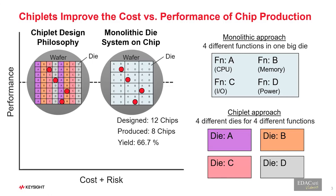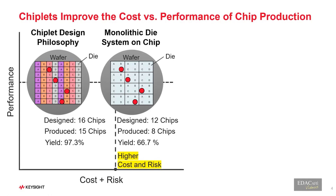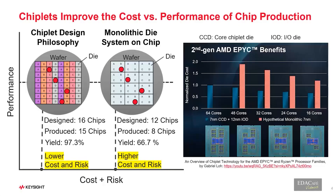With a chiplet design philosophy, with the same process and the same number of problems, you end up throwing away fewer chips, so the yield comes up. As die sizes have been getting bigger and bigger for hyperscalers and high-performance compute applications like AI, yield has become quite a significant issue. A great example is AMD being very successful in reaching a large number of cores for their packaged CPUs — by creating individual chiplets put together with a 12-nanometer IO die, they were able to keep product cost scaling very preferential.